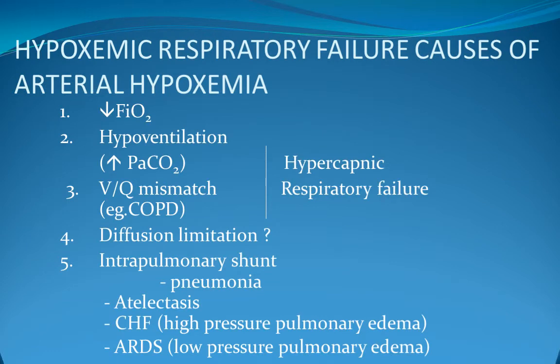Hypoxemic respiratory failure causes of arterial hypoxemia include low FiO2, hypoventilation causing increased PCO2, VQ mismatch as in COPD, diffusion limitation, intrapulmonary shunting, pneumonia, atelectasis, CHF, ARDS, and low pressure.